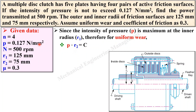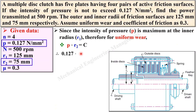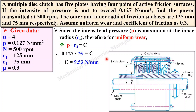Put the values: pressure = 0.127 and r2 = 75 mm into the formula p × r2 = constant. Simplify it so that you will get the value of C.